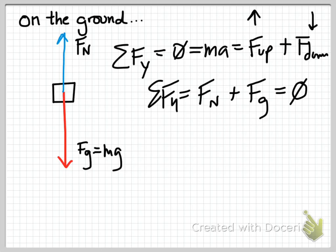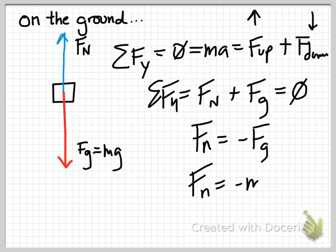What that means is that Fn is equal to negative Fg, which means Fn is equal to negative of mass times gravity. Acceleration due to gravity is negative 9.81 meters per second squared; therefore, the normal force is going to be positive. That's consistent with our conventions about the Cartesian coordinate system, that up away from the Earth is positive and down towards the center of the Earth is negative. This is the easy case — simple.